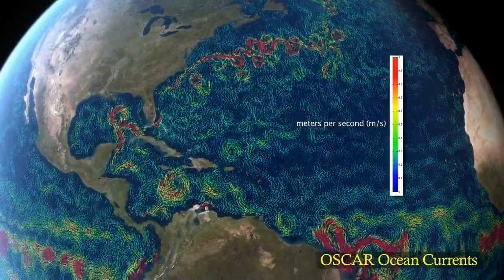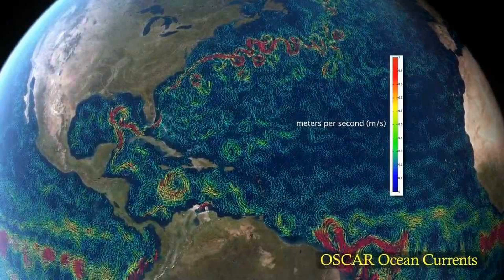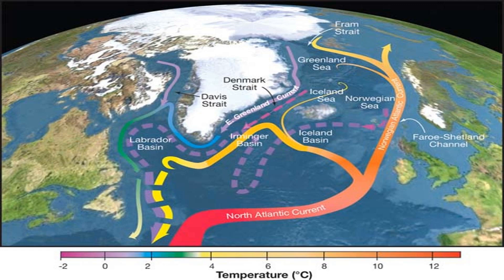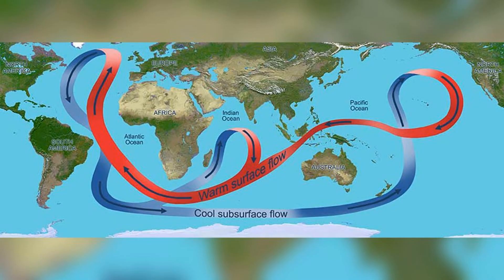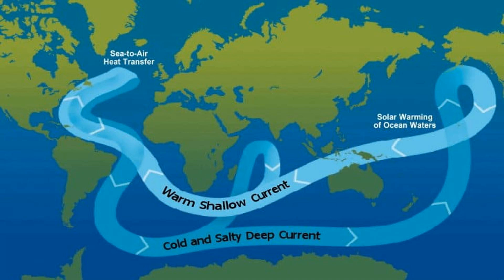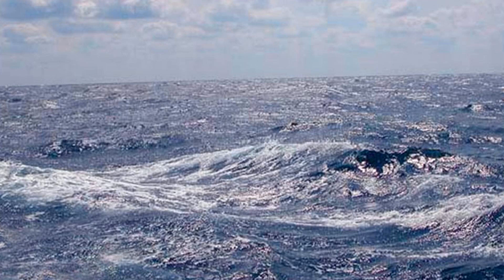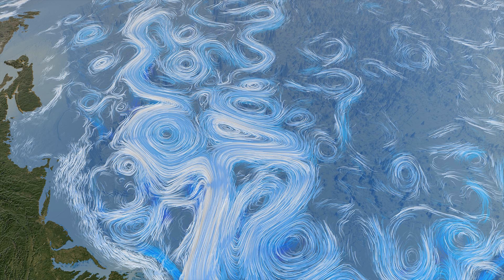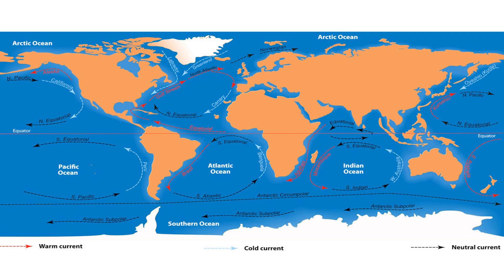Ocean currents play a crucial role in redistributing heat energy around the planet. For example, warm ocean currents carry heat away from the equator towards the poles, while cold ocean currents transport cooler water towards the equator. This heat transport has a significant impact on regional and global climate systems. The movement of ocean currents also affects the distribution of nutrients and influences marine ecosystems, which in turn can influence atmospheric conditions, contributing to the overall climate system and ultimately influencing the seasonal changes we observe.